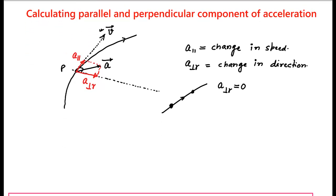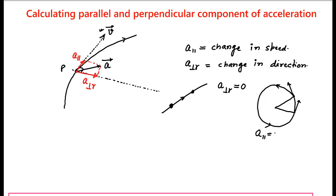Similarly, if an object is moving in a circle, what happens? The speed does not change — the magnitude of velocity does not change — but the direction changes. At one point this is the direction of velocity; at another point this is the direction of velocity. So the direction changes. In this case, the parallel component of acceleration equals zero because there is no change in speed, but the perpendicular component will not be zero because there is a change in direction.